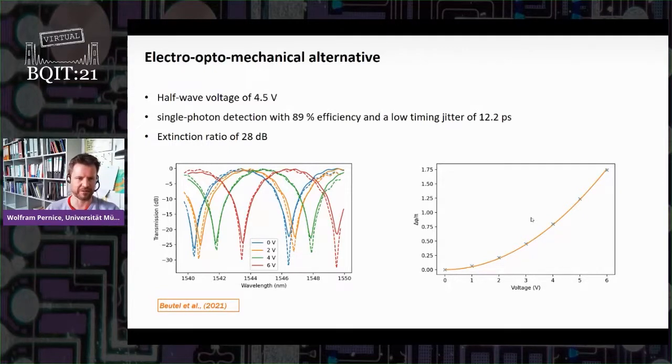But they have significantly lower driving voltage. So the half voltage here for getting a pi phase shift is only on the order 4.5 volt. This comes, of course, at the cost of speed, since these devices are mechanical. So they give you rather reconfigurability on the order of a few megahertz. Nevertheless, this is also a low dissipation device, and therefore holds promise for allowing for reconfiguring these structures inside the cryostat.